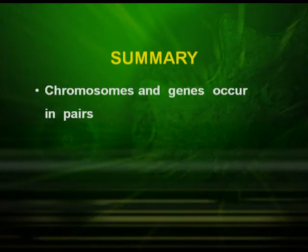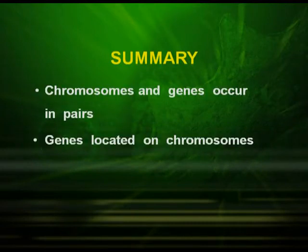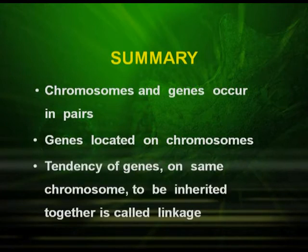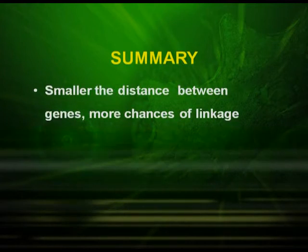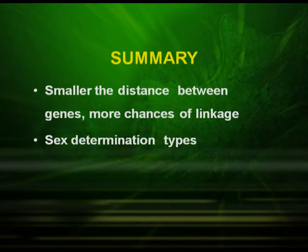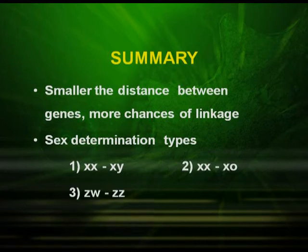Now let us come to the summary of the topics. First, chromosomes and genes occur in pairs. The genes are located on the chromosomes. The tendency of genes on the same chromosome to be inherited together is called linkage. Smaller the distance between the genes, more is the linkage. Sex determination occurs in types: XX/XY, XX/X0, ZW/ZZ, and Z0/ZZ.